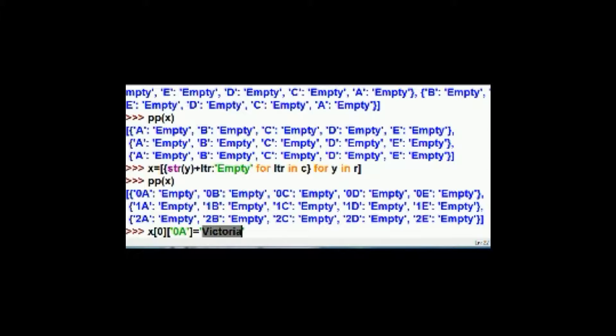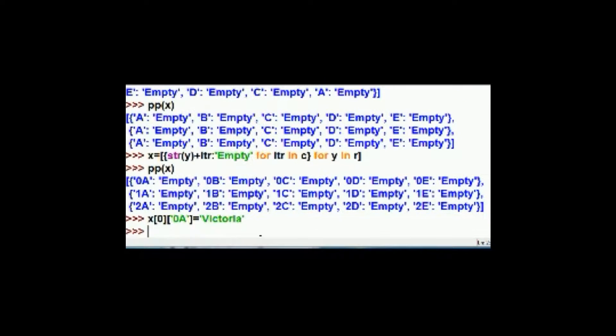So this woman called Victoria comes into the theater and buys this ticket. She wants to sit in the 0th row in seat 0A. That's right over here. Currently it's empty. So that's okay. So x[0] then the key 0A equals Victoria. I hit enter.